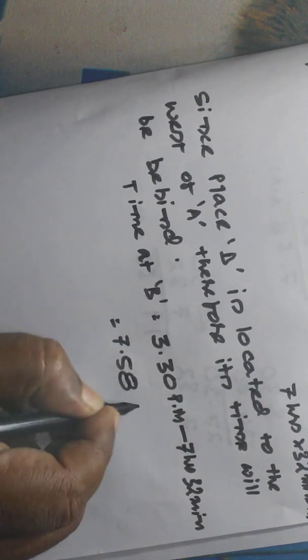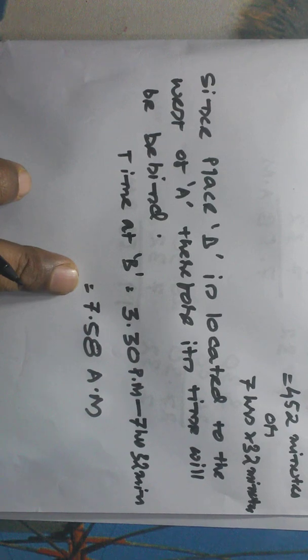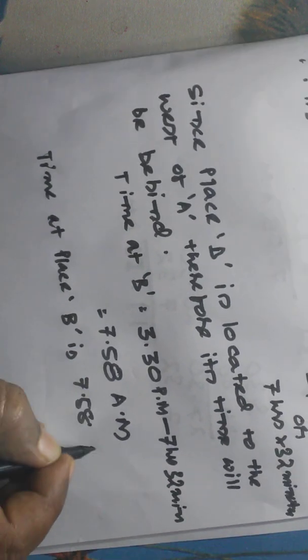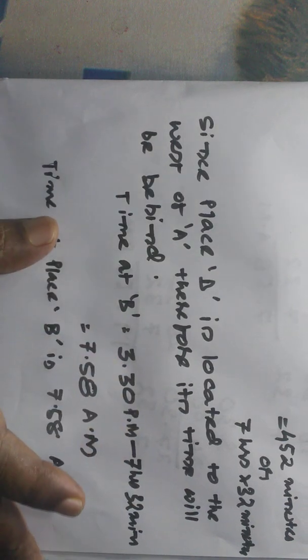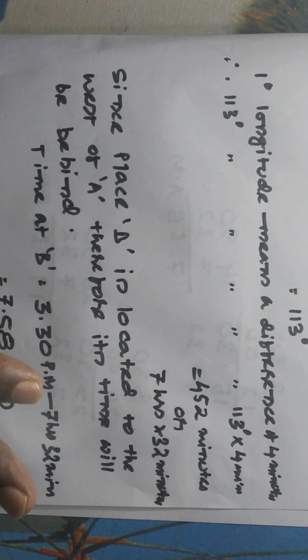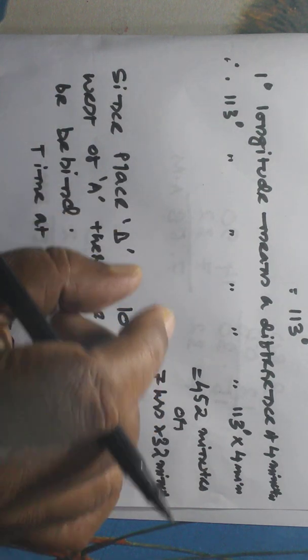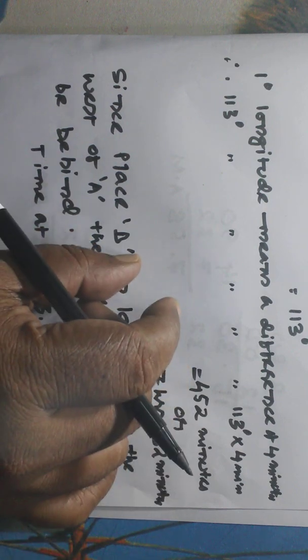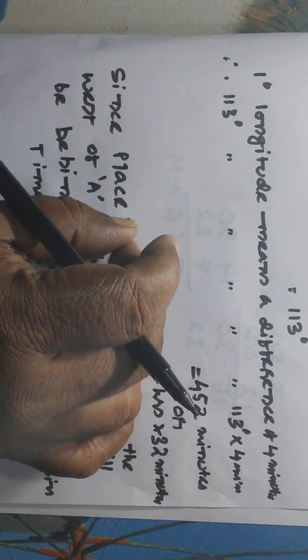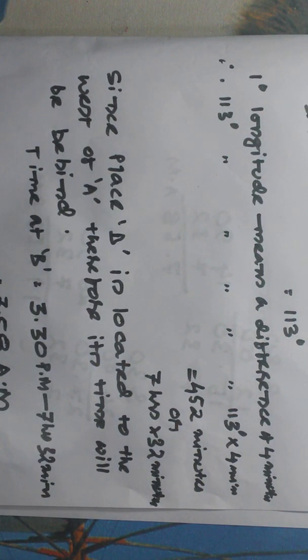The time at place B is 7:58 a.m. I hope you have understood the basic concept. In our next video we will discuss how to find out the longitude. In the meantime, practice the sums given in your book. We will discuss one more sum in another video — the videos cannot be too long for WhatsApp. Have a good day.